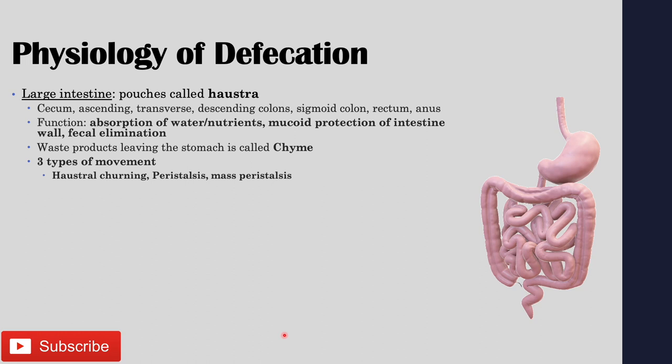The waste products that leave the stomach and travel to the small intestine and then to the large intestine are called chyme. There are three types of movement that help move chyme along. First is haustral churning, which is a back-and-forth movement that also helps with water absorption. Then you have peristalsis, which is a wave-like movement. And then mass peristalsis, which is a powerful wave-like movement that usually occurs right after eating — the first big push that helps get digestion going.